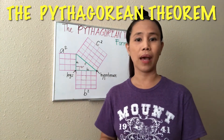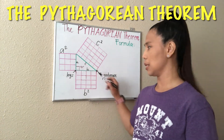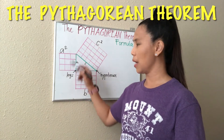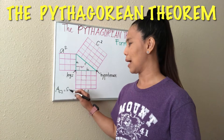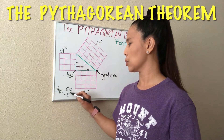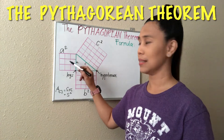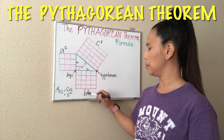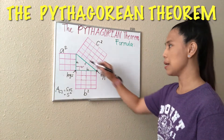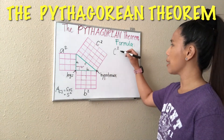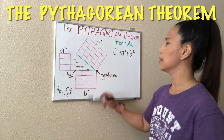This theorem states that the area of the square whose side is the hypotenuse is equal to the sum of the areas of the squares on the other two sides. So since we are getting the area of this square, remember that the formula for getting the area of a square is equal to side times side, or we can say S squared. So since this is named A side, we get A squared. B would be B squared and C side would be C squared. The formula then is C squared equals A squared plus B squared.